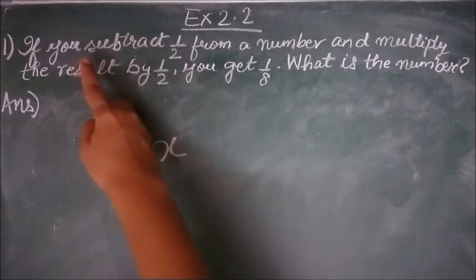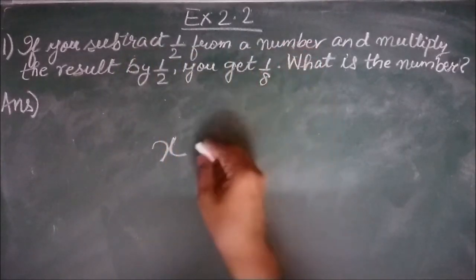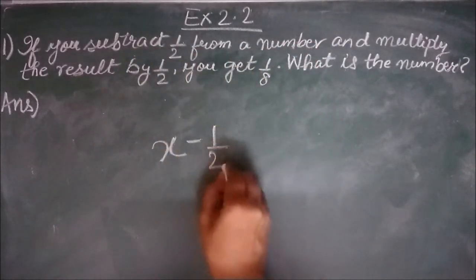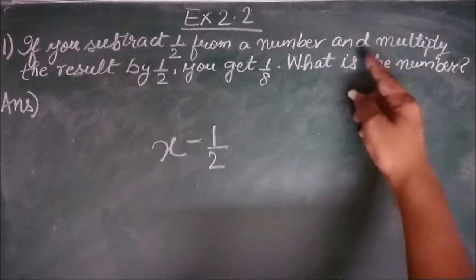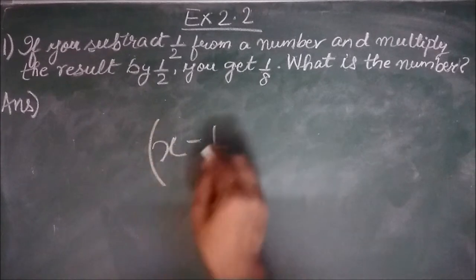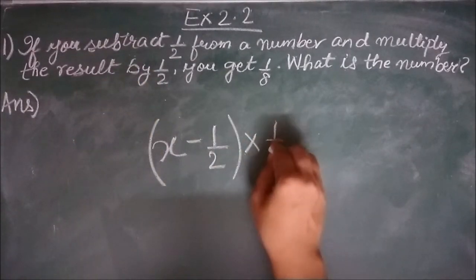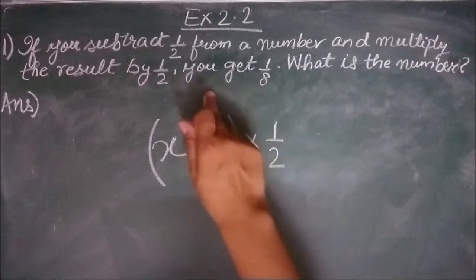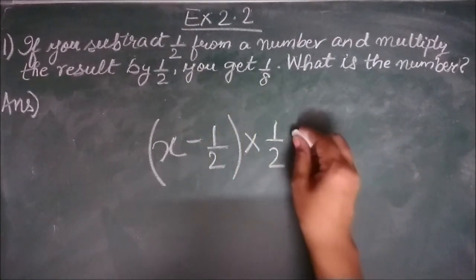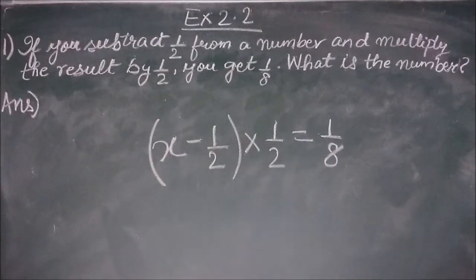So what are we doing here? We are subtracting 1 by 2 from x and multiply the result. Whatever the result we get out of it, we multiply it by 1 by 2. You get 1 by 8. The result should be equal to 1 by 8. This is our equation.